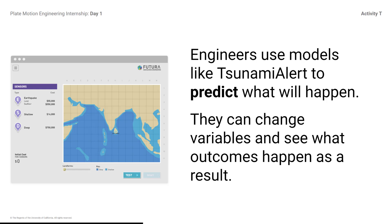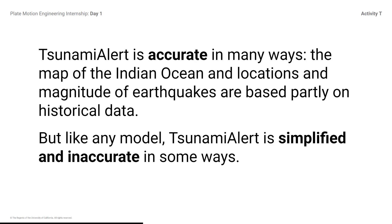Tsunami Alert is a scientific model. Scientists often make and use models like these to study things that they cannot measure directly. They can change variables and see what outcomes happen as a result, and this lets them predict outcomes in the real world under similar conditions. Tsunami Alert is accurate in many ways, but like any model, it is also simplified and inaccurate in some ways.